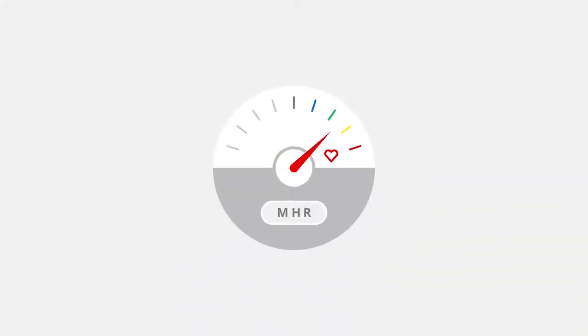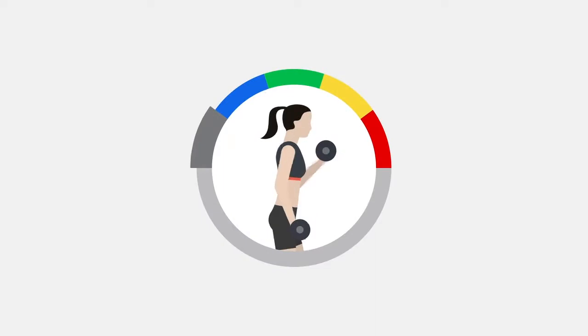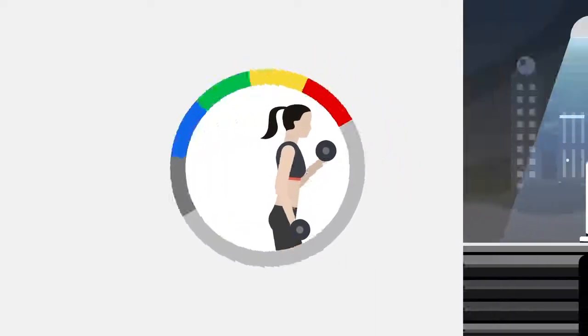The MZ module calibrates to your maximum heart rate, or MHR, and then tracks effort as a percentage of that number. During workouts, you'll end up in one of five zones based on your intensity.